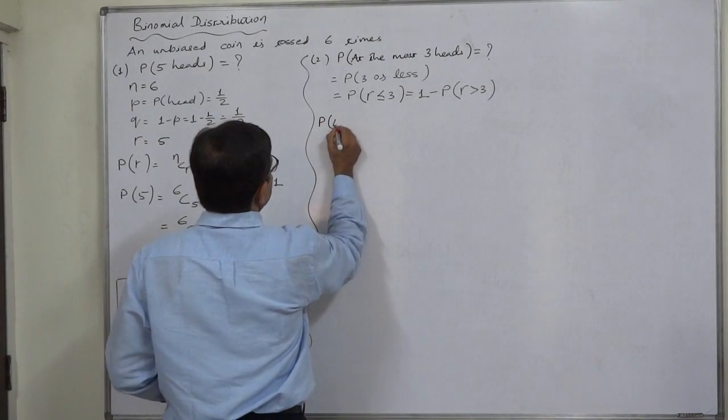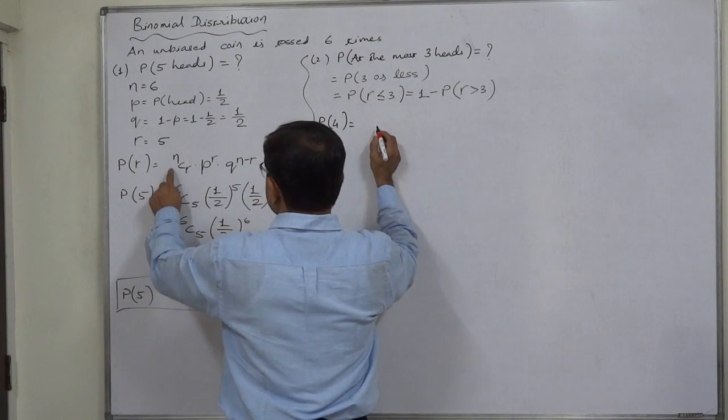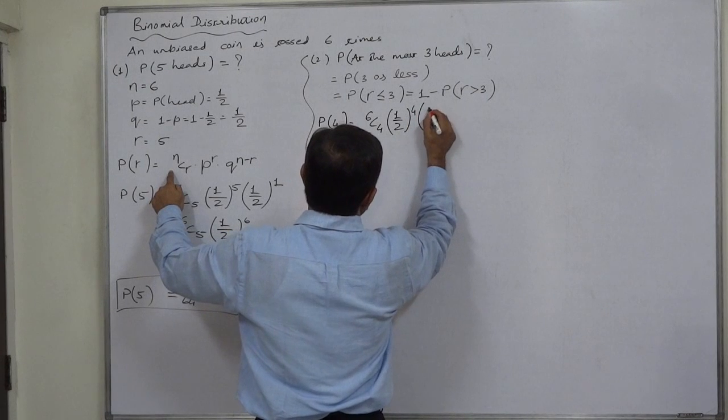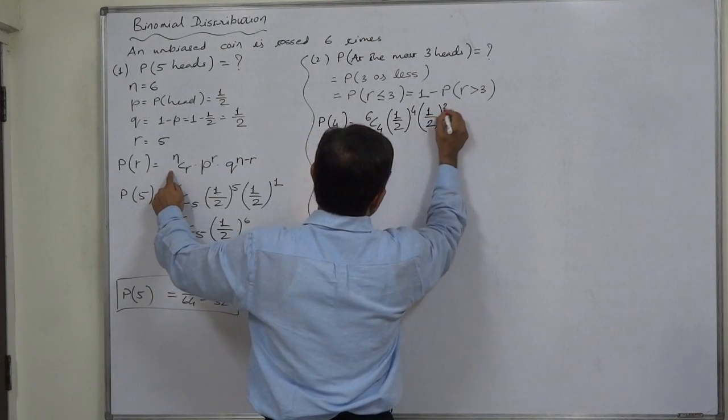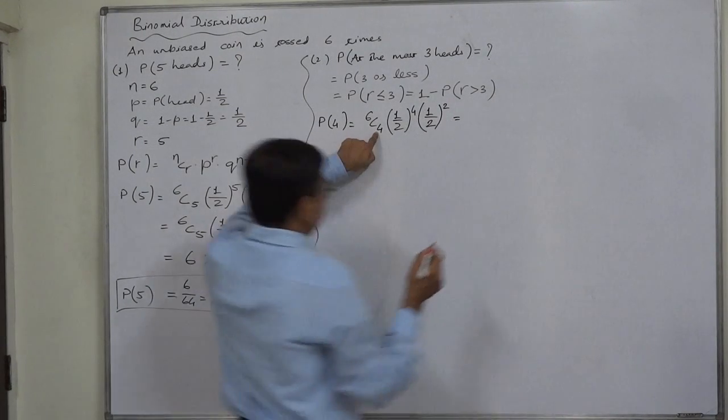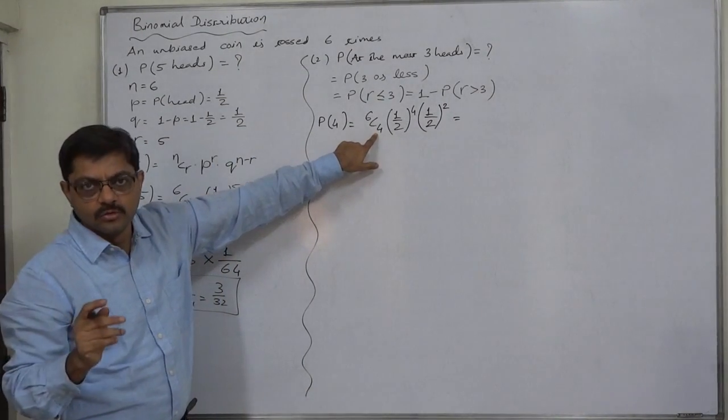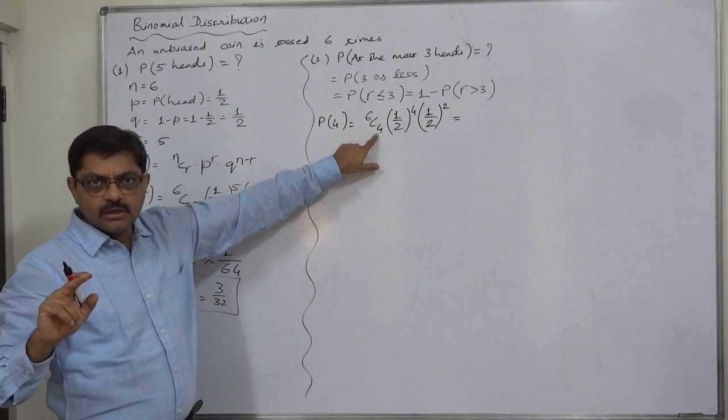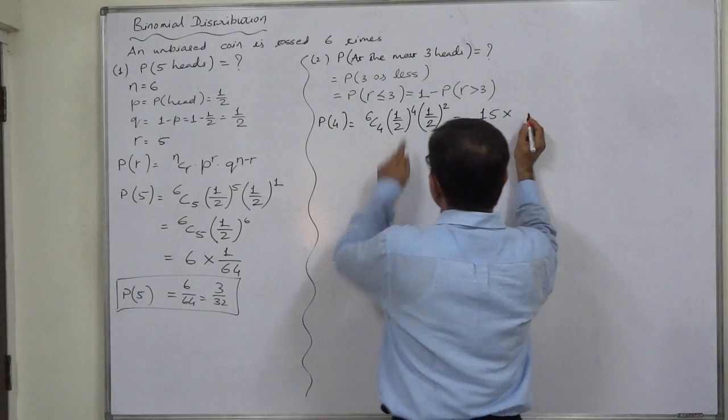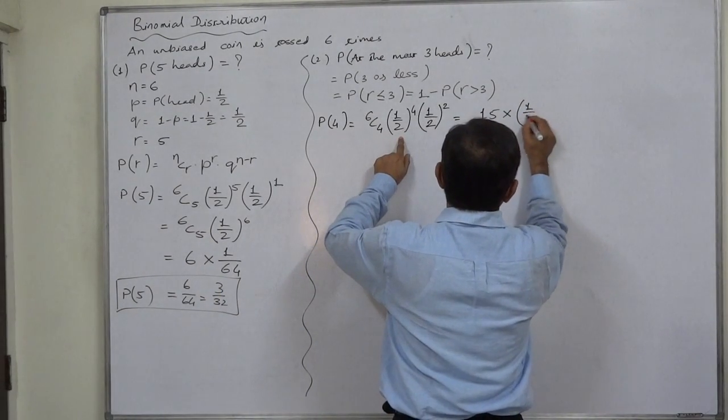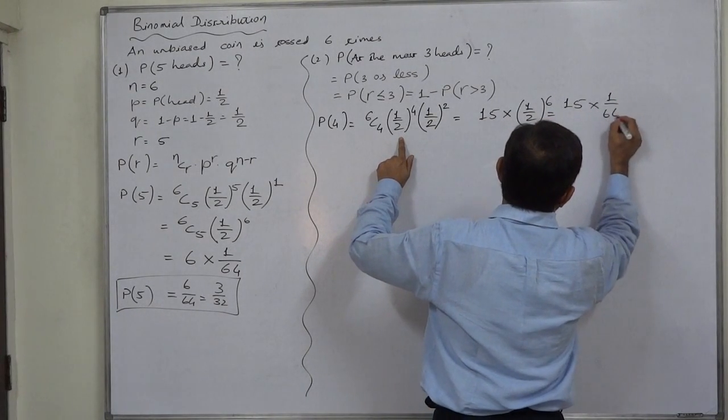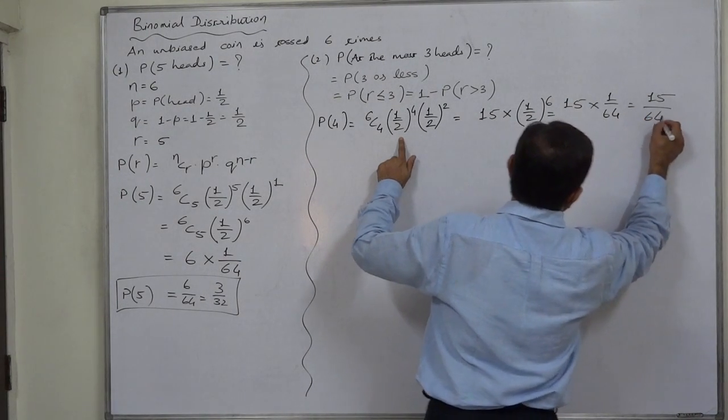So let us calculate probability of four heads. That will be 6C4 into one by two raised to four into one by two raised to six minus four, two. So it is 6C4, which is equivalent to 6C2. 6C2 is six into five by two, that is thirty by two, fifteen. Fifteen into one by two raised to six, that is fifteen into one by sixty-four. So it is fifteen by sixty-four.